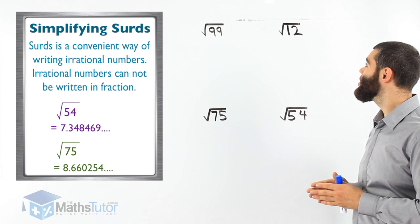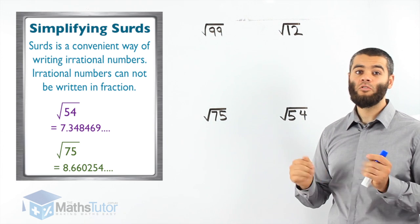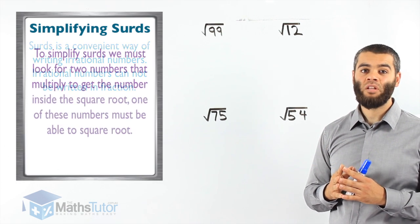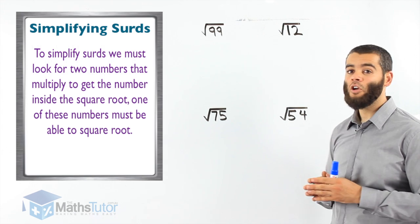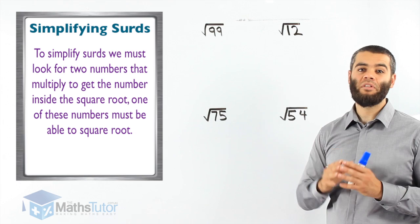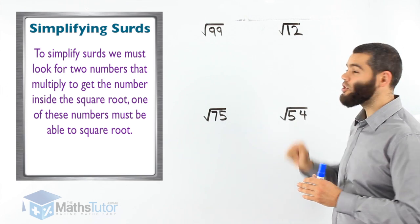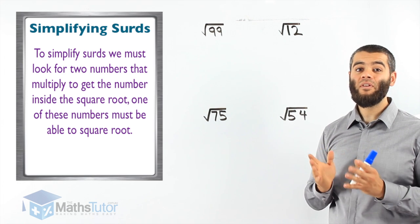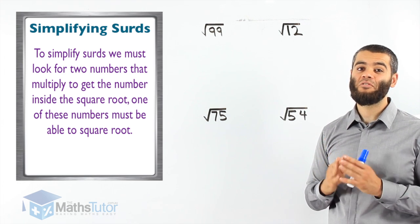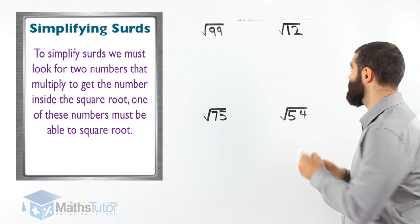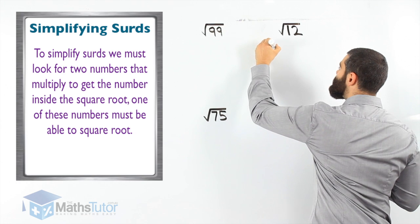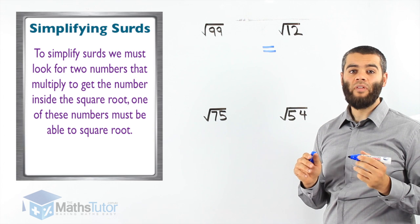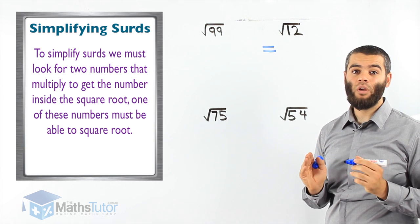Let's start by doing one at a time, starting with square root 12. We want to simplify that into its simplest form. When we are simplifying surds, we look for two numbers that multiply to get 12, and one of them has to be able to square root. So we're looking at factors of 12 — two of them — where one must square root.